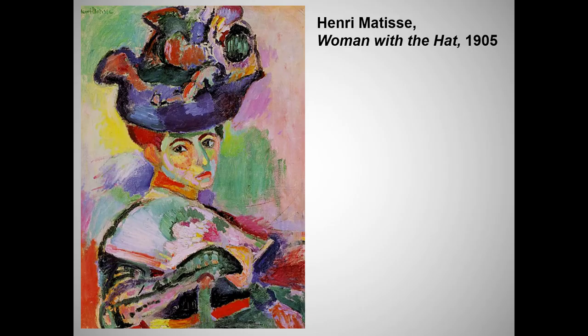Here again we see color liberated from descriptive reality — not even Parisian women sport green noses. Like Cézanne, Matisse uses color patches, advancing warm colors and receding cool colors to create a perception of depth, while still embracing the essentially two-dimensional quality of painting.